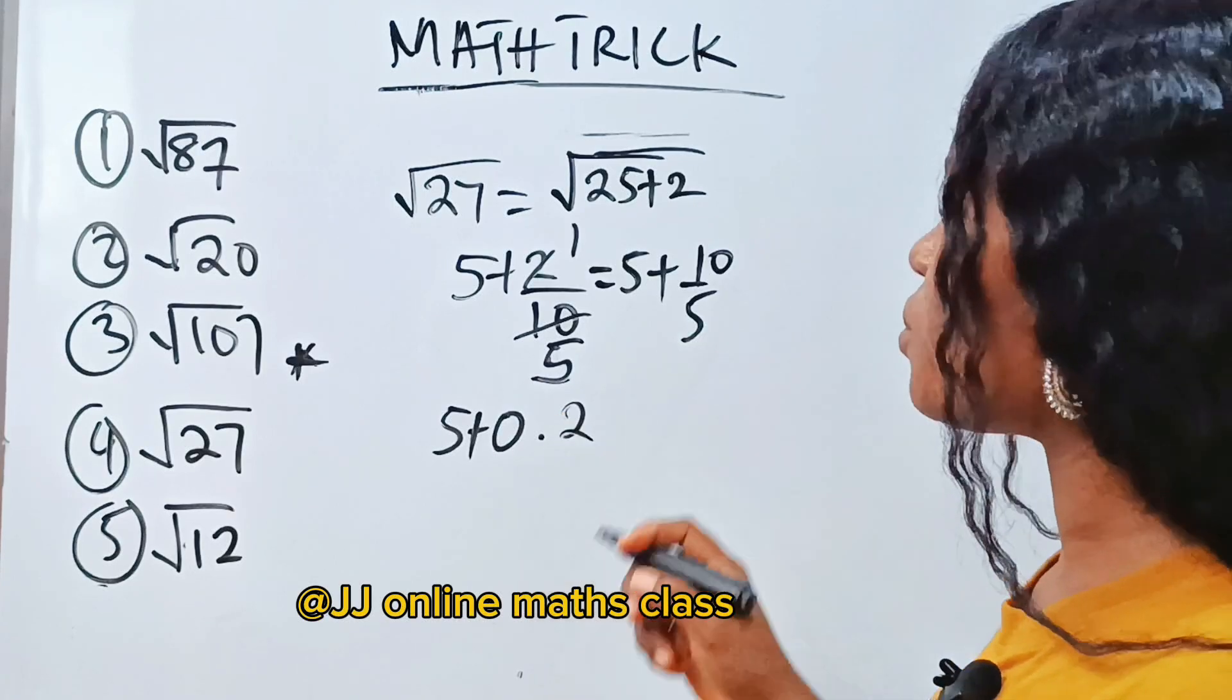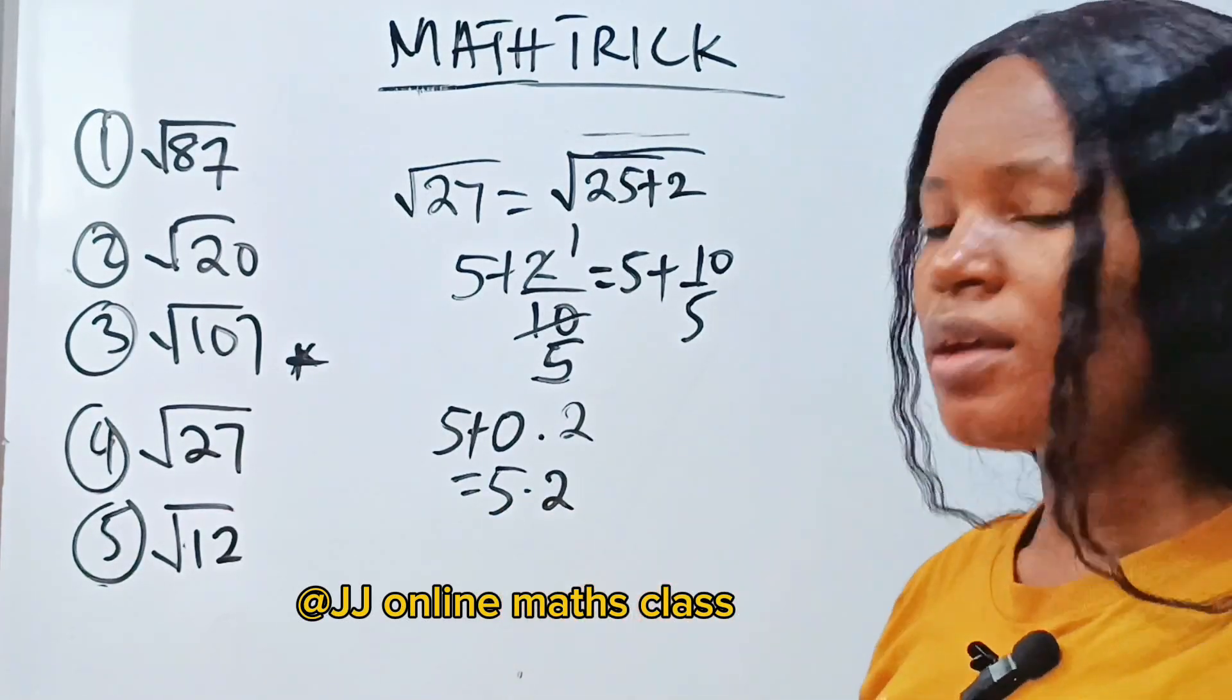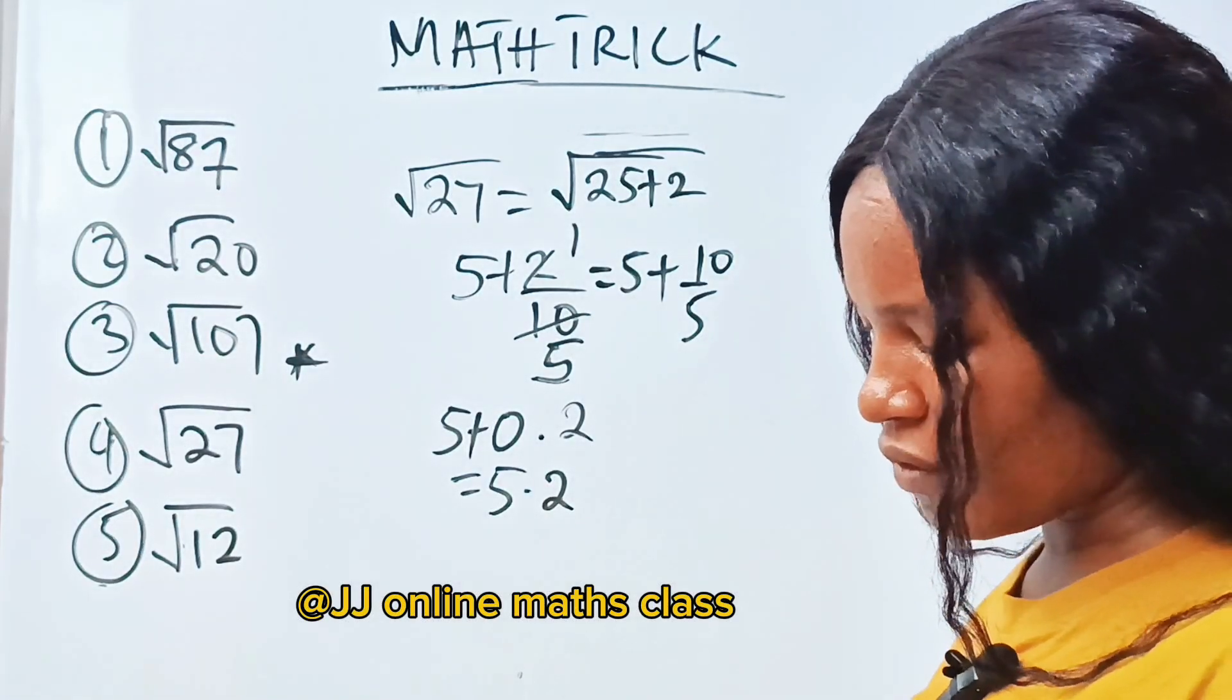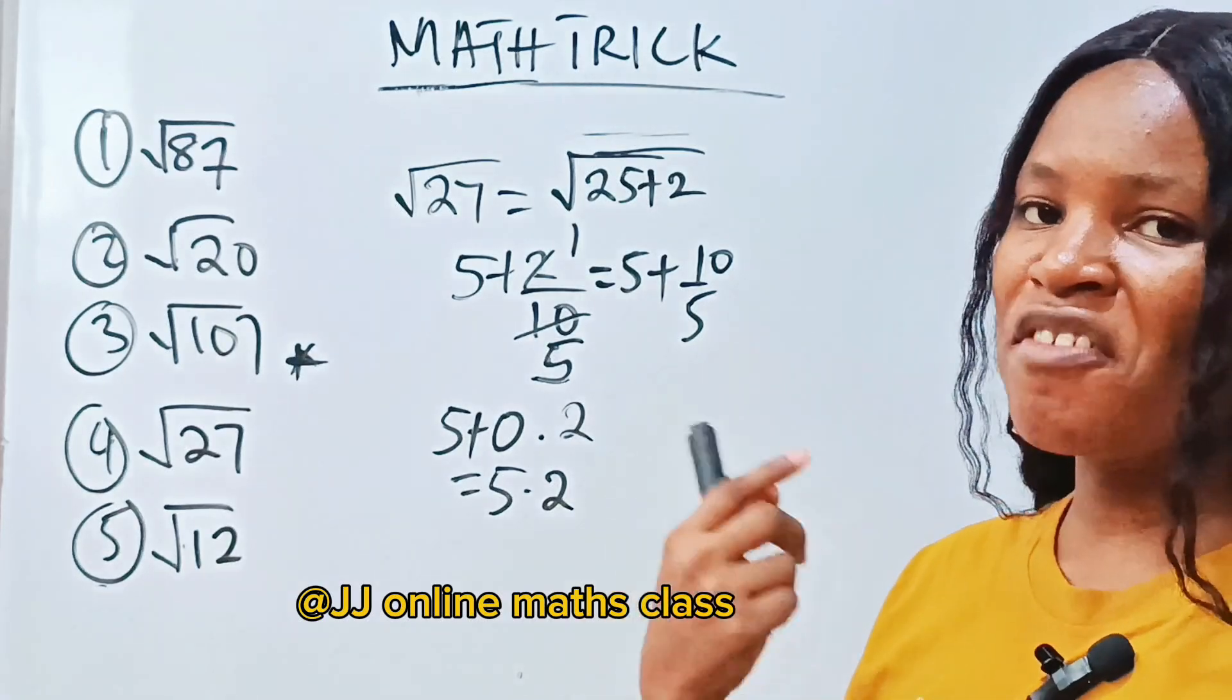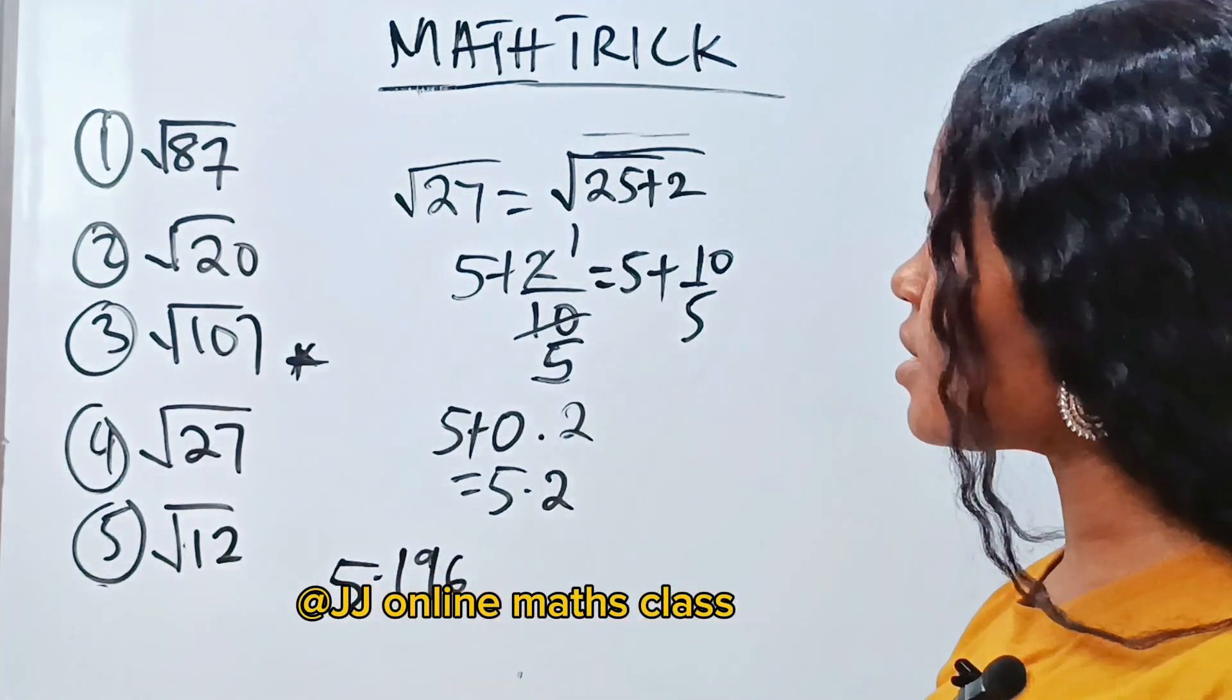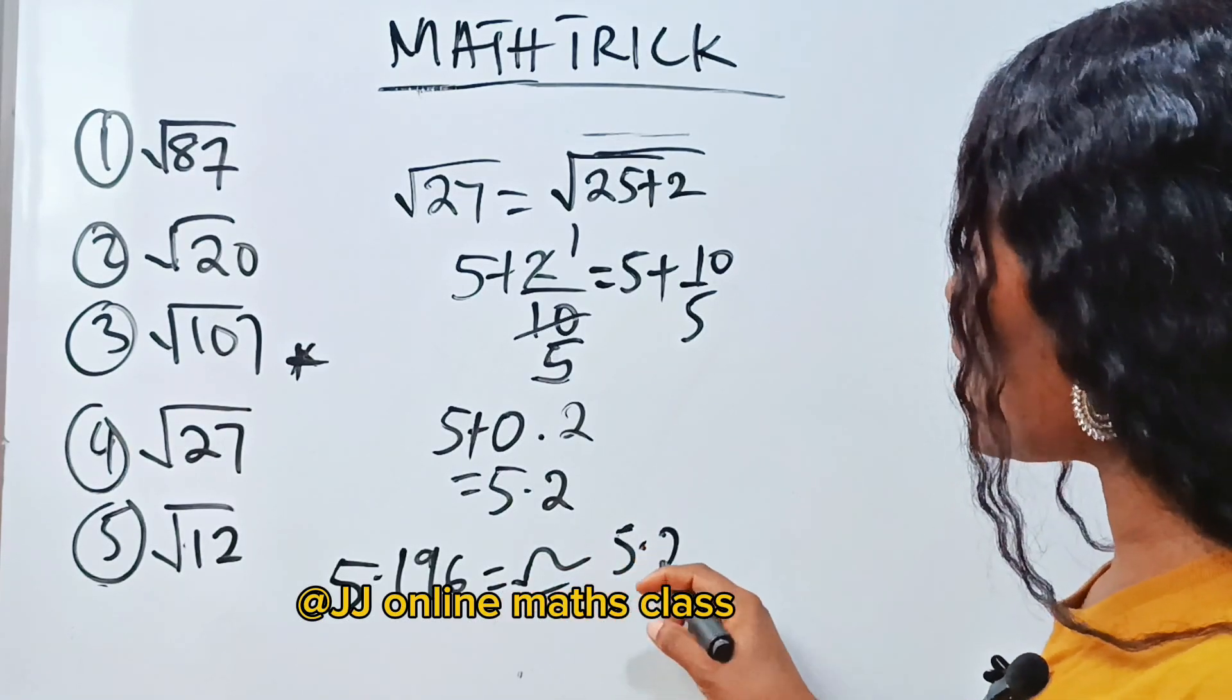So that means this is 5.2. Now let's check. Square root of 27 will give us 5.196. 5.196, which is approximately 5.2. So that is it.